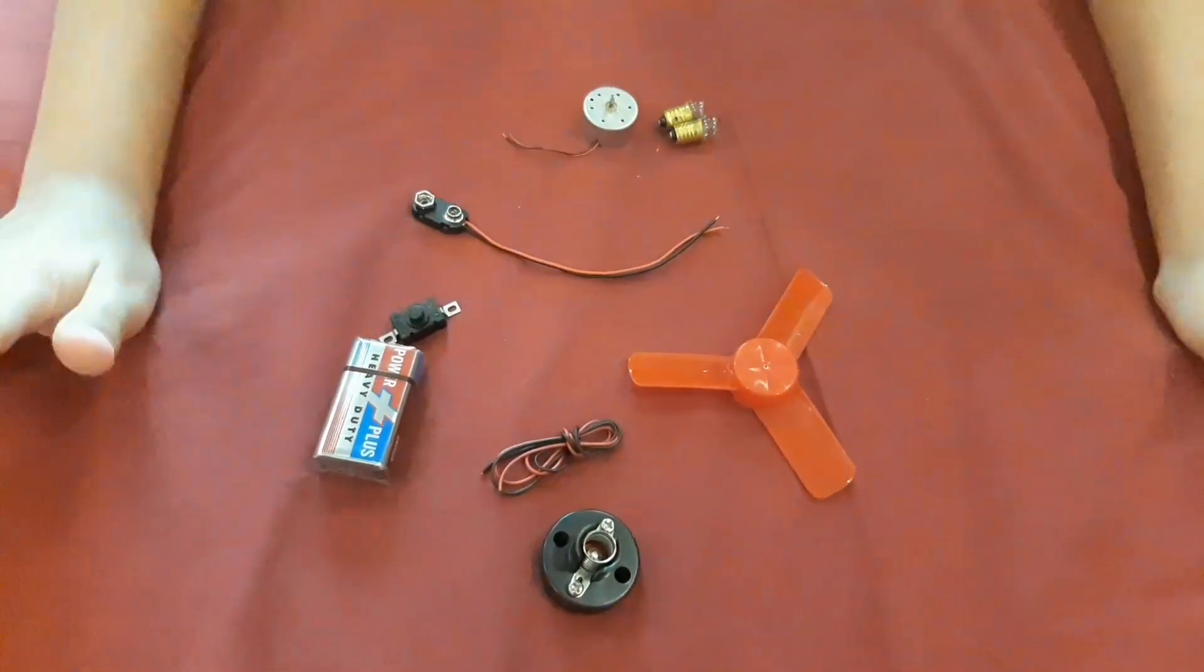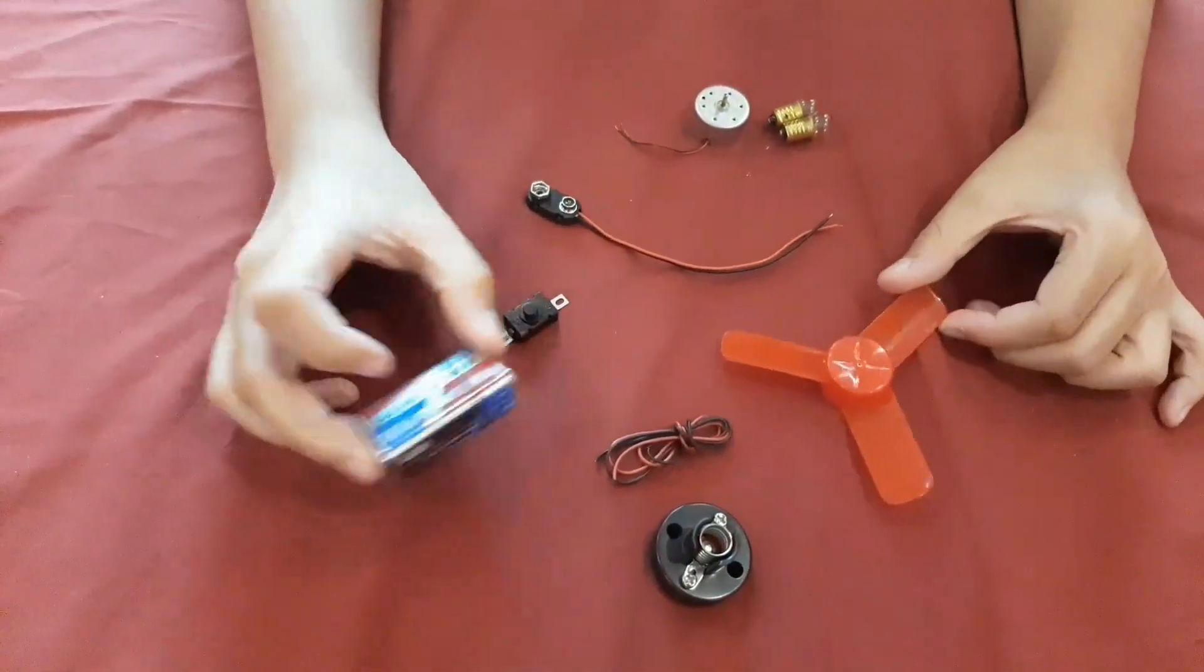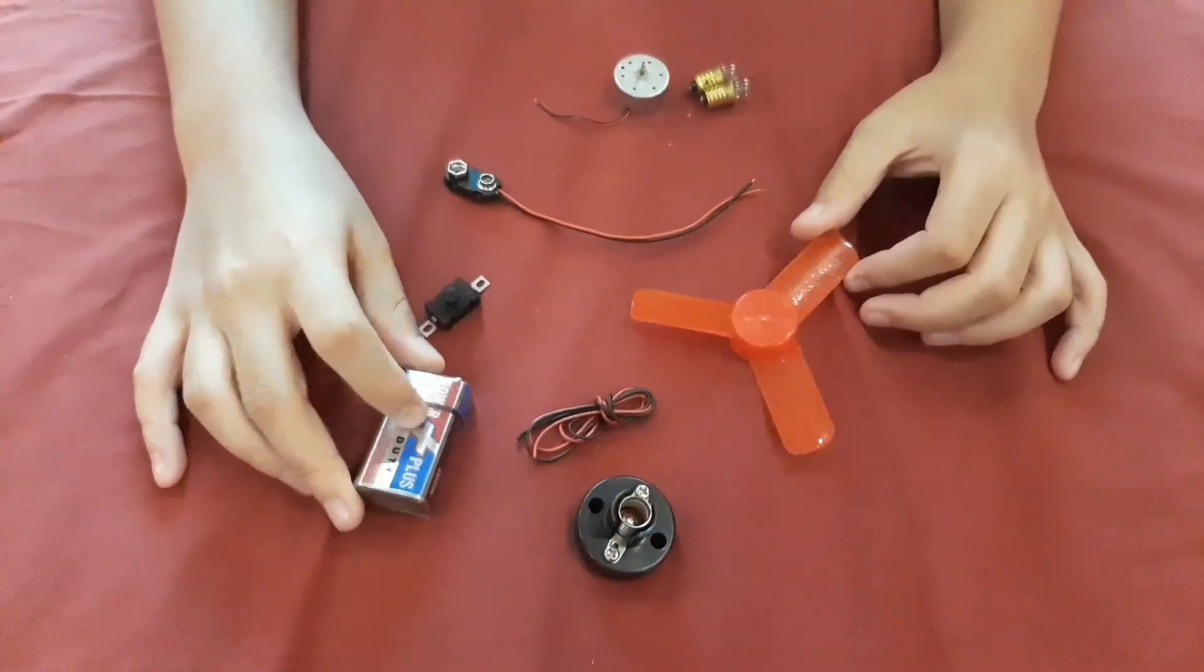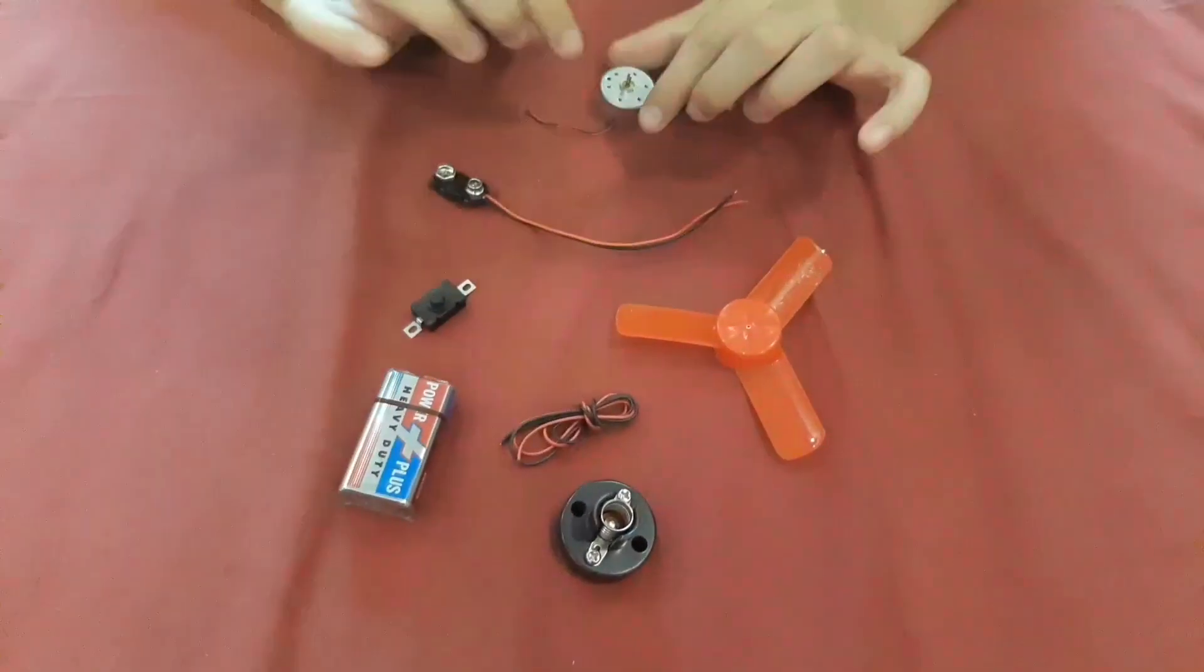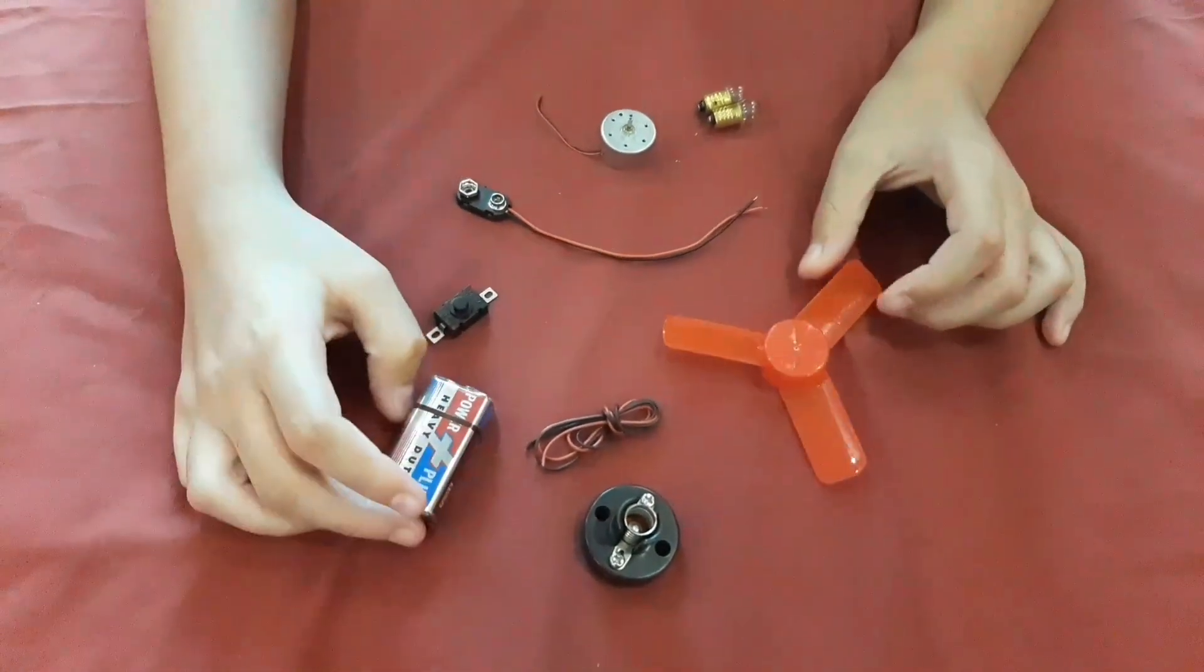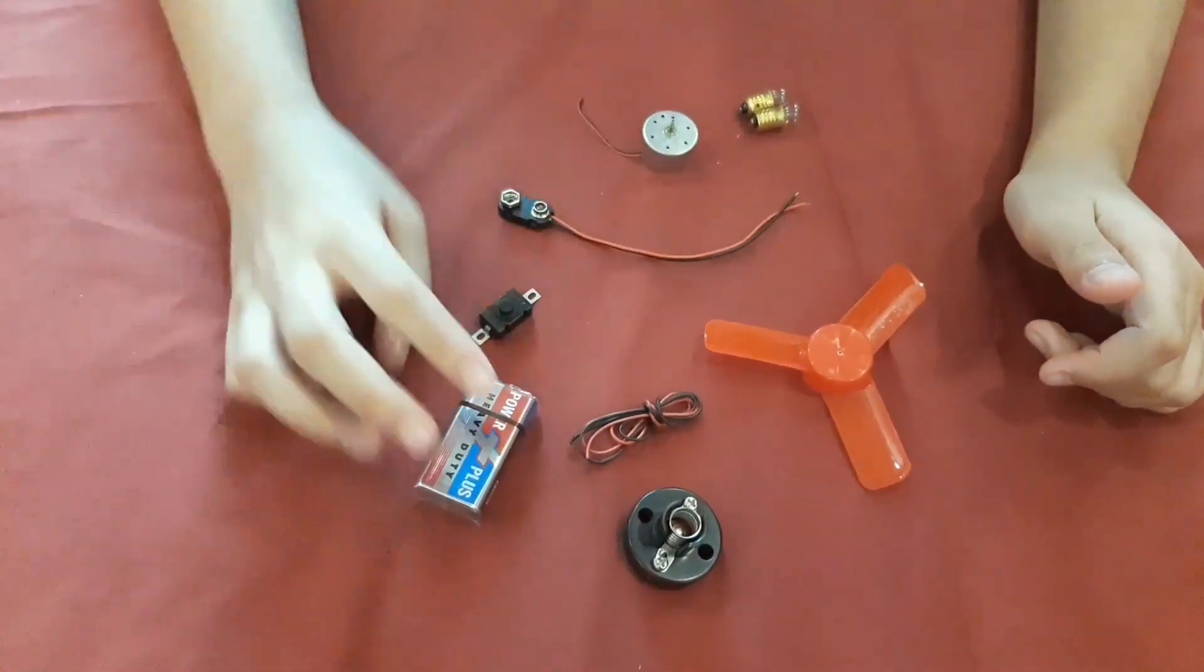All right guys, so we're here. These are just some basic things for a basic circuit that I got from our local hardware store. We got a cool little motor, a fan, a light bulb, some extra wires, a stand for this battery that will power it all.